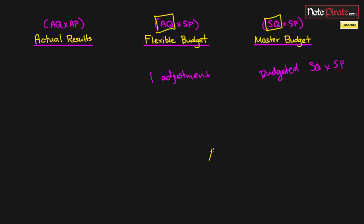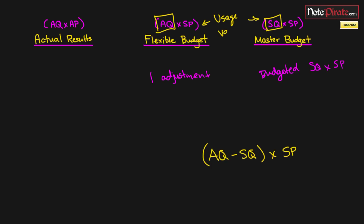If we wanted to calculate the variance between the master and the flexible budget, it would be: actual quantity minus standard or budgeted quantity, times the standard price. Since the only difference between these two budgets is quantities, this variance is called the usage variance — also known as the quantity variance or the efficiency variance. That's where those terms come from.